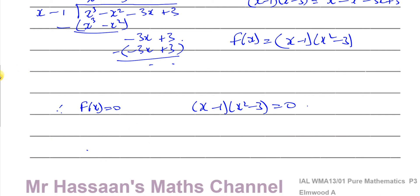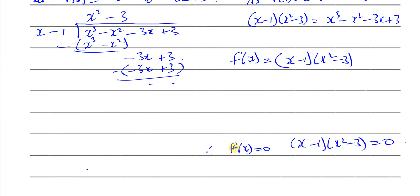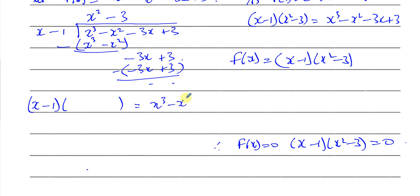Before solving, let me also show you how to reach the same stage using identities. Since (x - 1) is a factor, we know (x - 1) times something equals x³ - x² - 3x + 3. Multiplying a linear factor (x - 1) by something that gives a cubic means that something must be quadratic — of the form ax² + bx + c. We can compare coefficients to work out a, b, and c.